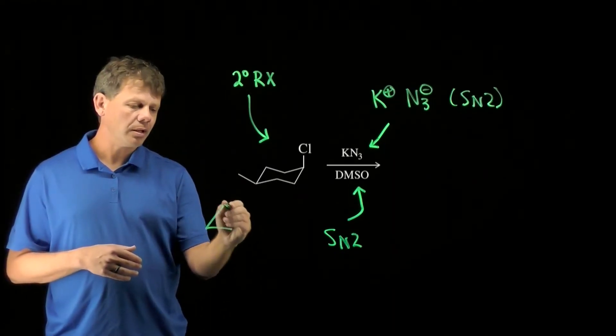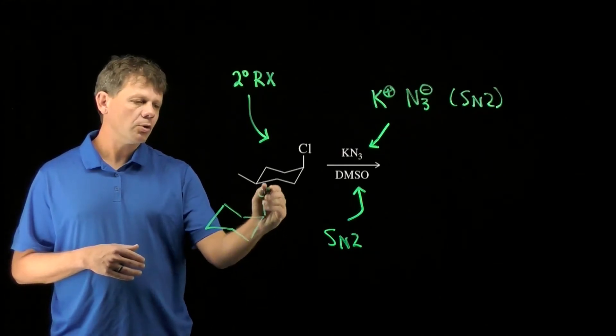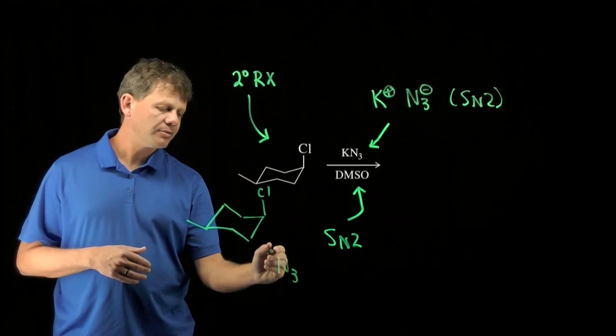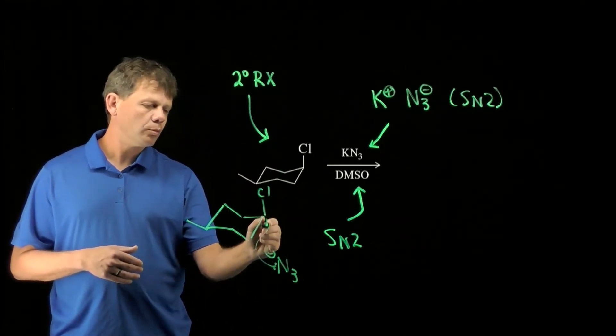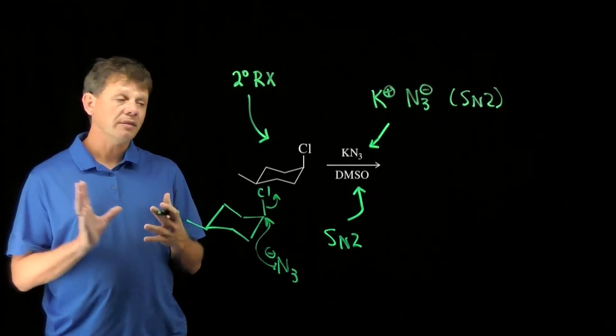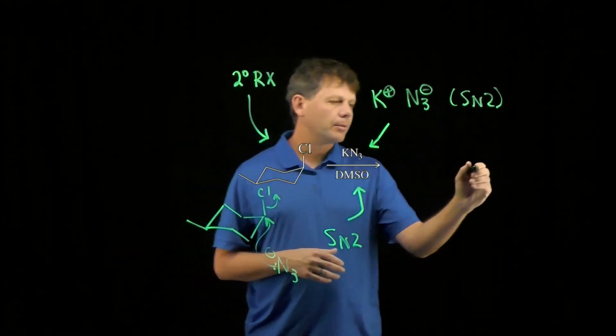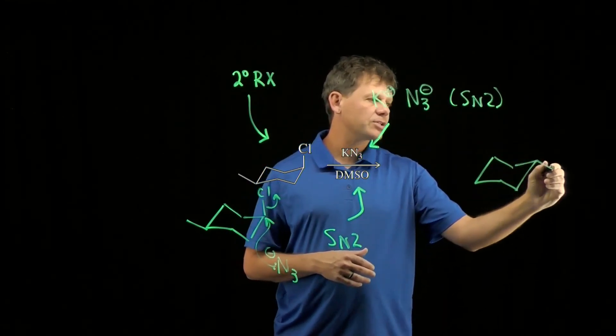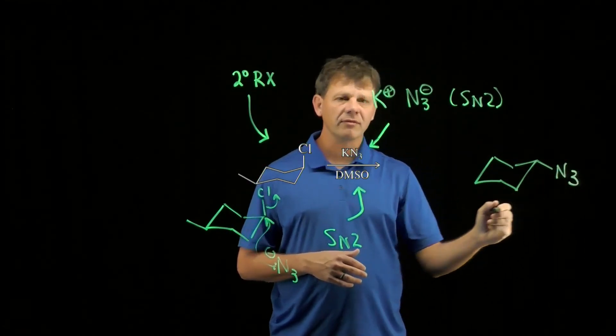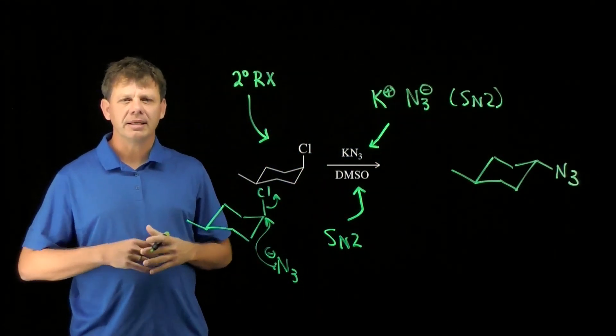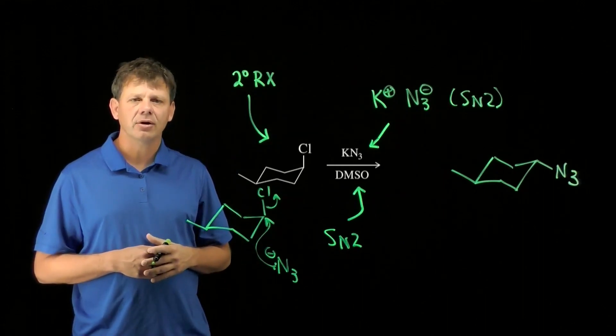So I can redraw the molecule here to show the SN2 reaction occurring. We know that N3 minus will react in a concerted step to produce the chloride leaving group and a product with inverted stereochemistry. So the reaction will proceed with inversion. In fact, showing the inversion helps us to understand that it must have been an SN2 reaction that occurred.